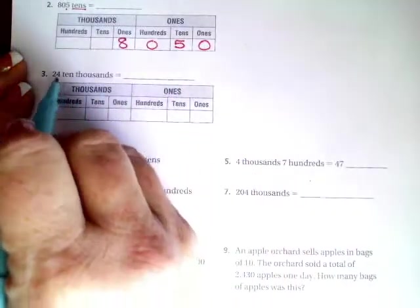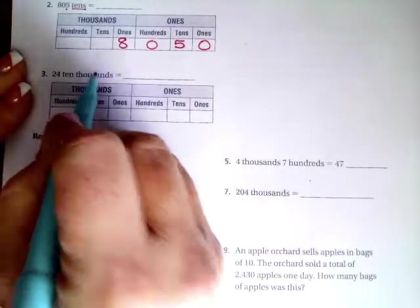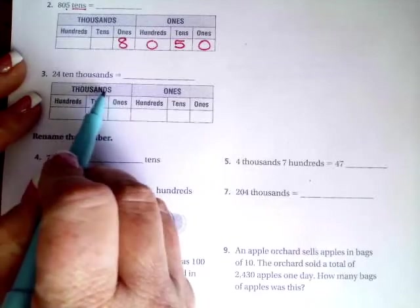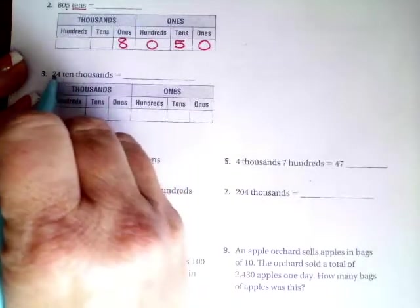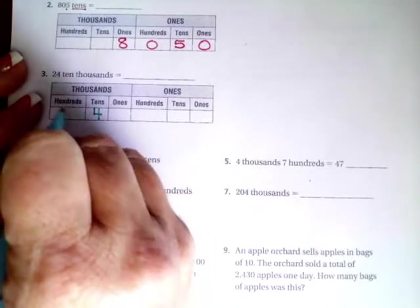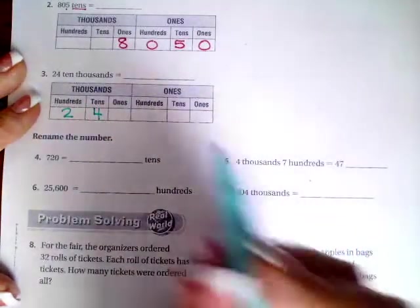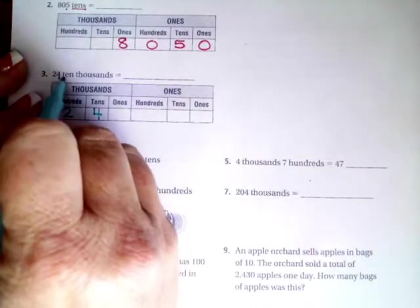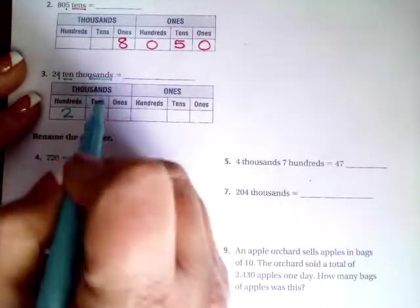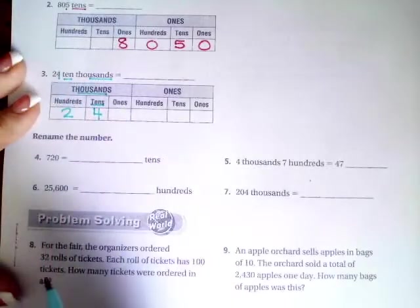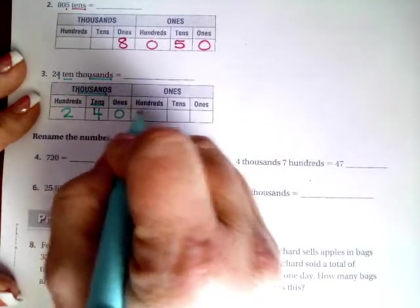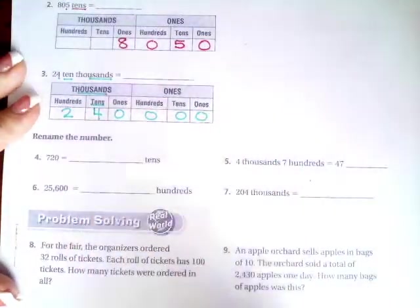Let me show you this guy. Twenty four ten thousands, so we're in the ten thousands. Your four is gonna go here and your two is going to go there. It says twenty four ten thousands, so I'm in the thousands, I'm in the tens, I put my four there, everything afterwards becomes a zero.